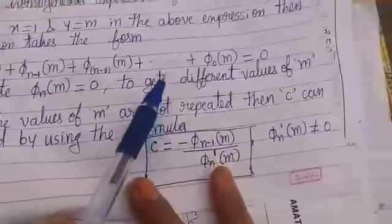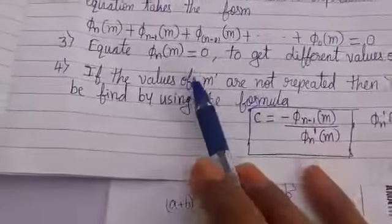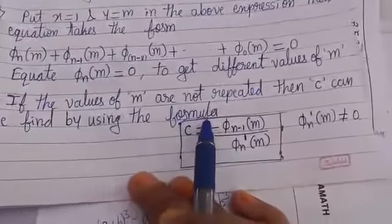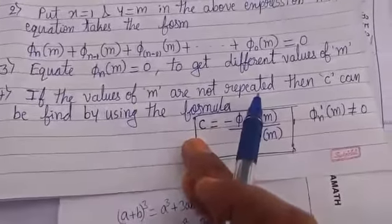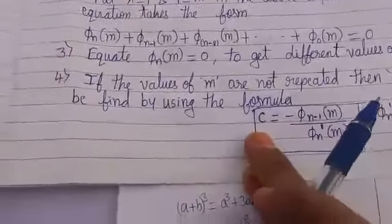Next, if the values of m are not repeated, that is if all m values are distinct, then c can be found by using the formula.